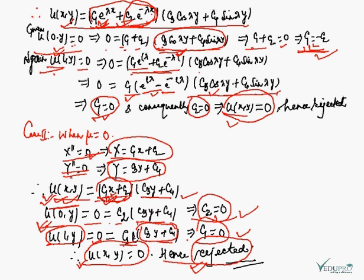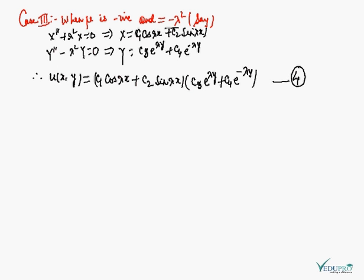Case 3: μ is negative; assume μ = −λ². Equations become X'' + λ²X = 0 and Y'' − λ²Y = 0. Solving: X = c₁cos(λx) + c₂sin(λx), and Y = c₃e^(λy) + c₄e^(−λy). Therefore u(x,y) = [c₁cos(λx) + c₂sin(λx)]·[c₃e^(λy) + c₄e^(−λy)].